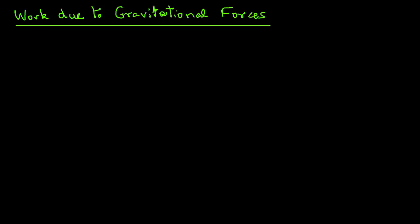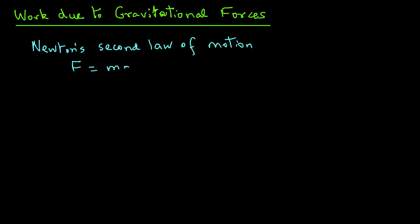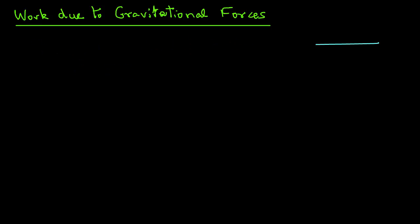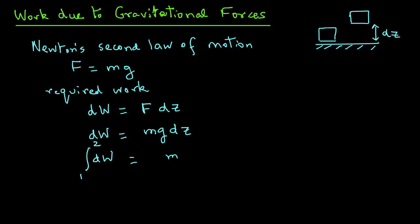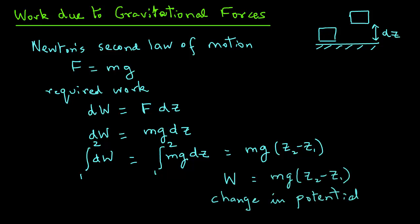Let's look at work due to gravitational forces. Newton's second law of motion gives F equals mass times acceleration due to gravity, so F equals mg. If we raise an object by distance dz, then the required work is dW equals F times dz, or mg times dz. Integrating from 1 to 2, since mass and gravitational acceleration are constant, we get W equals mg(z2 minus z1), which represents the change in potential energy from location 1 to 2.